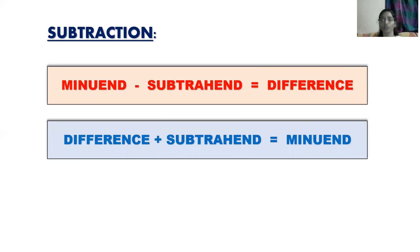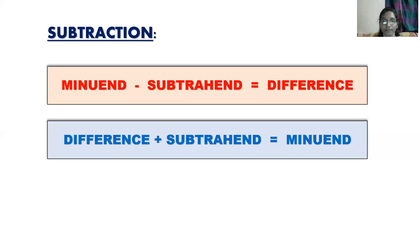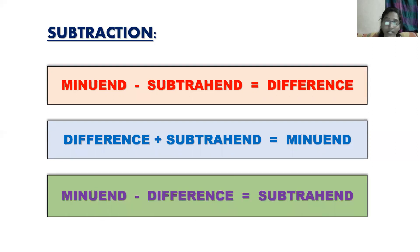Now suppose the minuend is missing. The difference and subtrahend are given, so the formula is: difference plus subtrahend gives you the minuend. In case the subtrahend is missing and the minuend and difference are given, then the formula is: minuend minus the difference gives you the subtrahend.